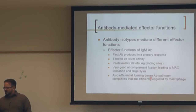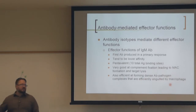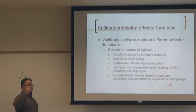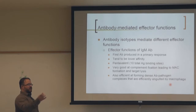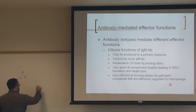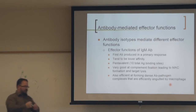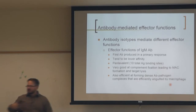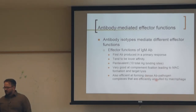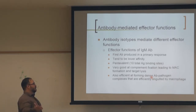IgM also induces agglutination. In blood typing, when you mix blood with anti-A or anti-B antibody and look for agglutination, that's IgM forming large complexes — binding to multiple targets and creating cross-linked aggregates that can be neutralized and removed. The anti-A and anti-B antibodies used in blood typing are IgM antibodies.